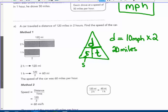A car traveled a distance of 120 miles in two hours. Find the speed of the car. Well, first way you could do it, you could bar model it. Two bar models, two bars represent the two hours.